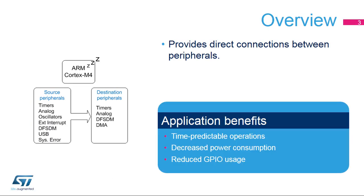The Interconnect Matrix, integrated inside STM32 products, provides direct connections between peripherals. Applications benefit from these interconnections to ensure time-predictable operations, to decrease power consumption by avoiding complex management of peripheral communications through reading and writing registers using CPU instructions, and in some cases, reducing the need to loop the signal from a source to a destination through a dedicated GPIO.